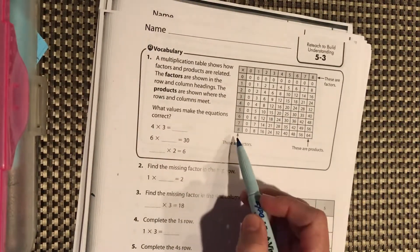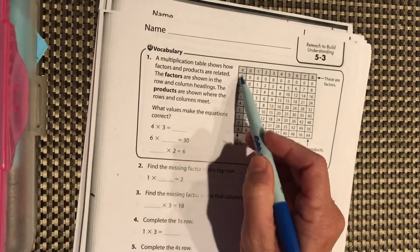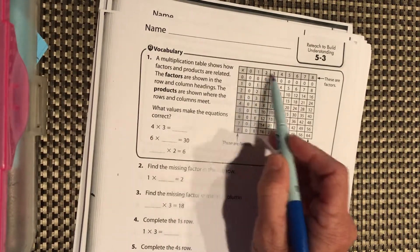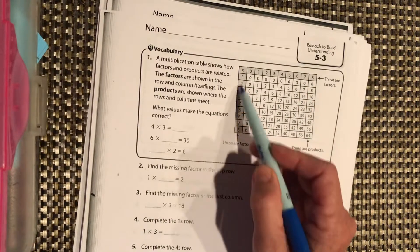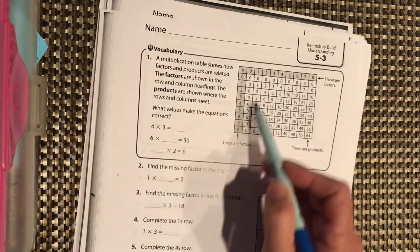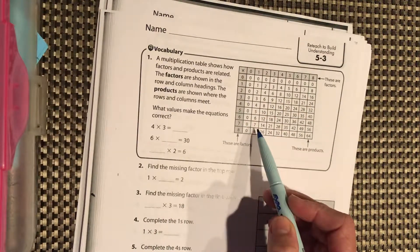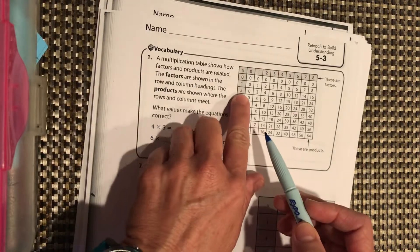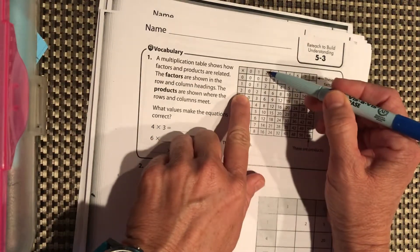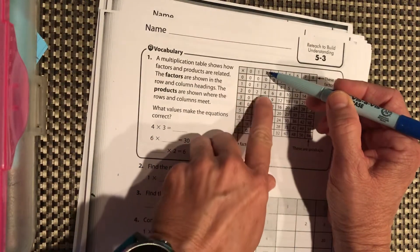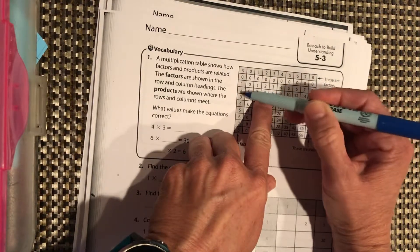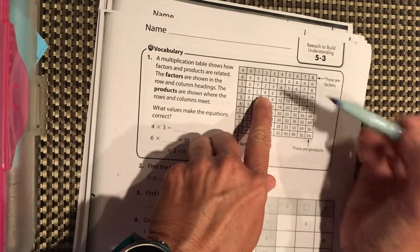When you're using a multiplication chart, your factors are along the side and the top. So you have a factor times a factor, and everything inside of here, these are all the products. So if I were to look at 2 and 2, and I go to where this row and this column meet, my product of 2 times 2 is 4.